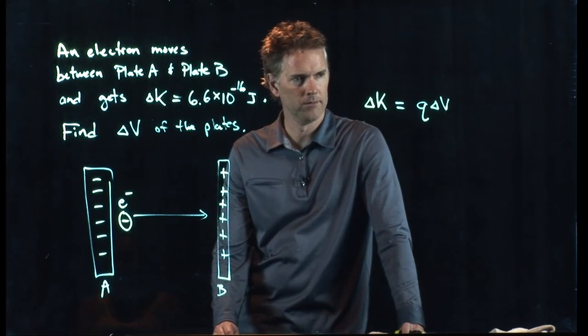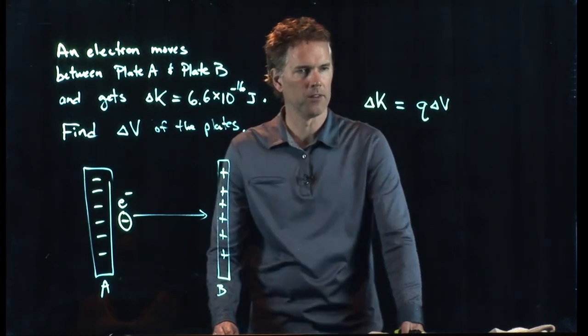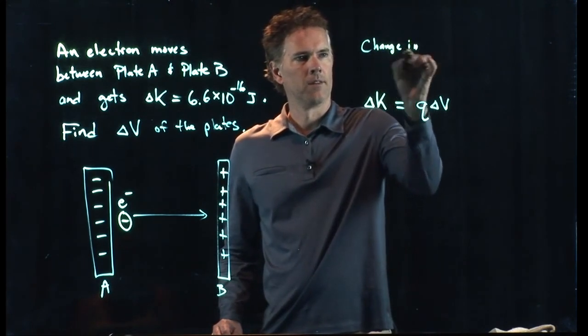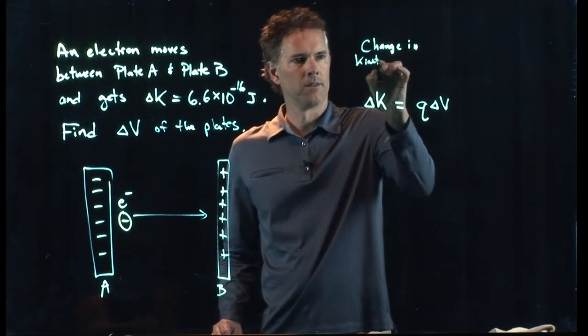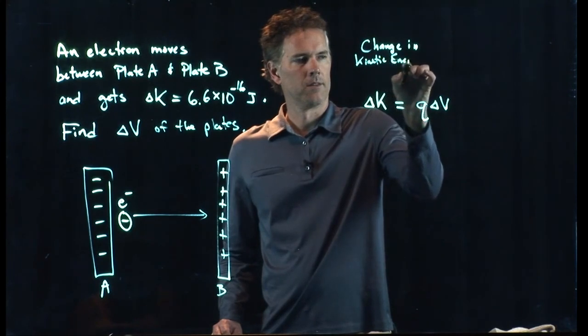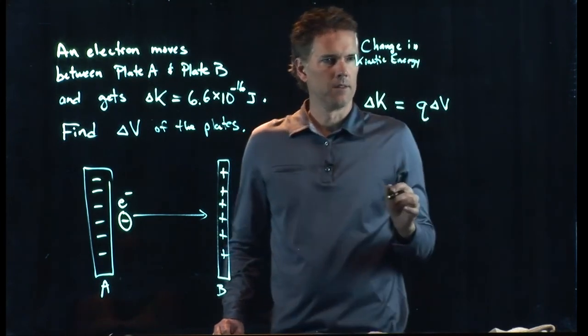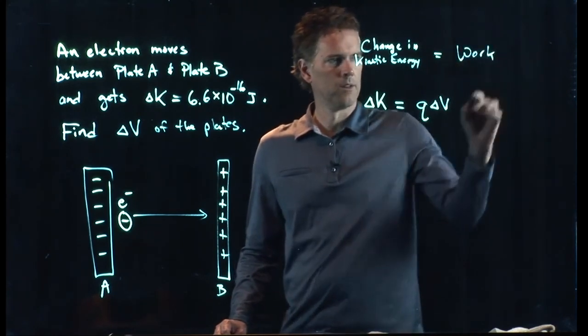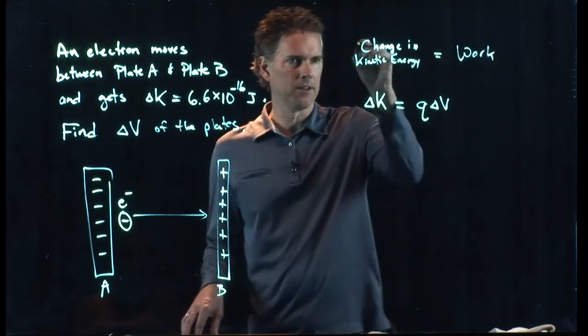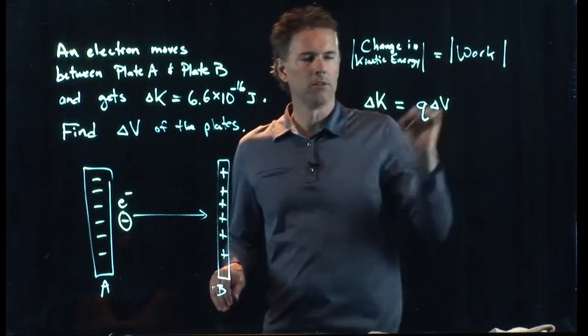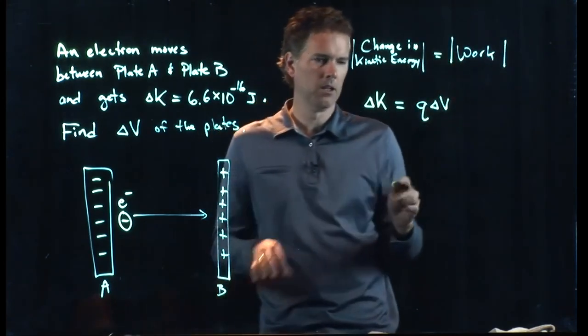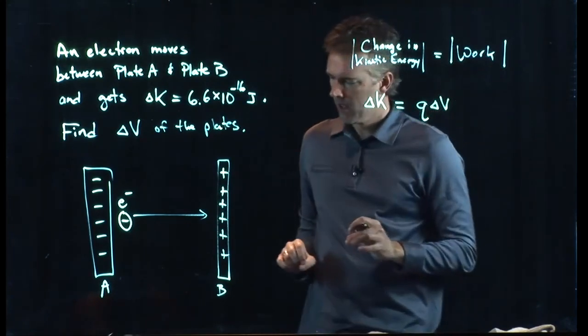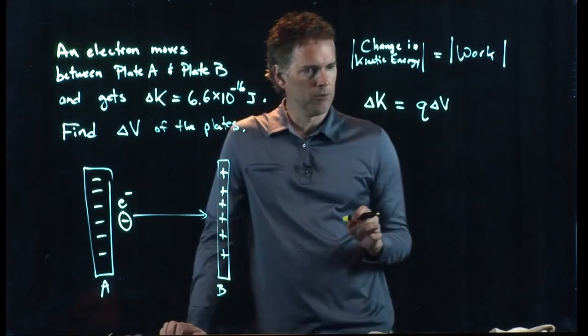That doesn't look too bad. Let's see if it makes sense. Change in kinetic energy, it's got to be equal to the work that goes into it. And we're not worried about signs here. We'll worry about that in part B. So, we put some magnitudes on that thing. And therefore, we don't have to worry about signs here. Delta K equals Q delta V. We're solving for delta V.